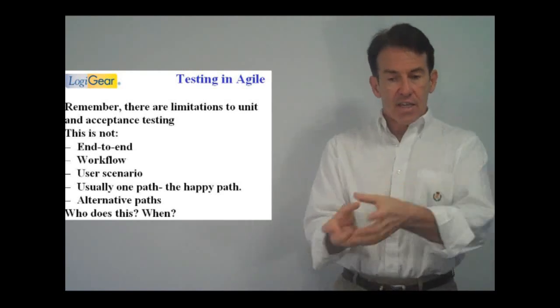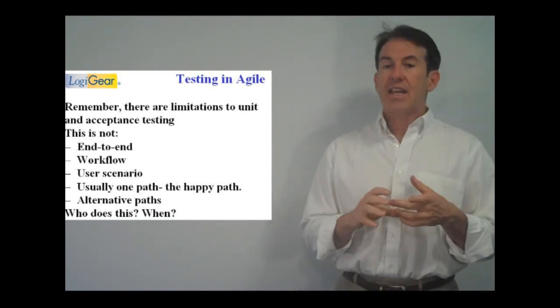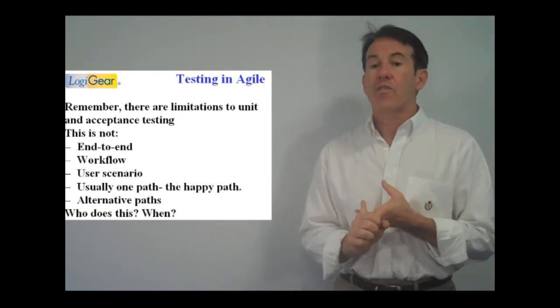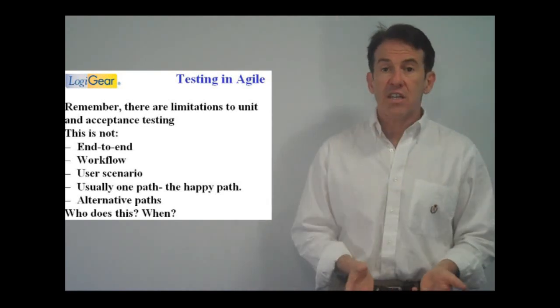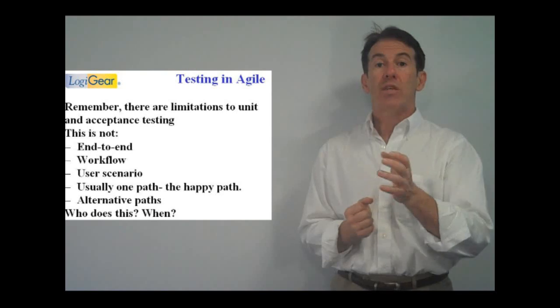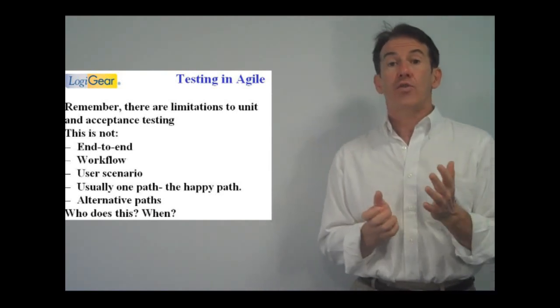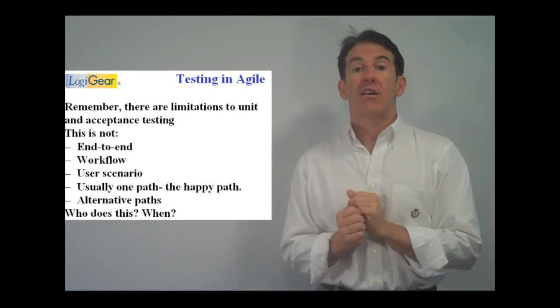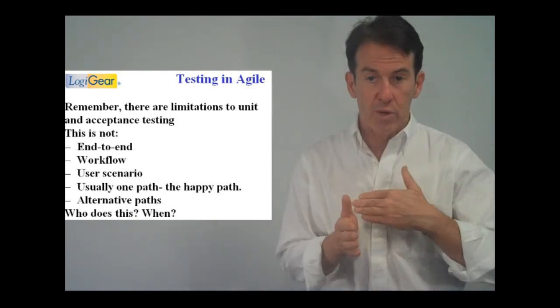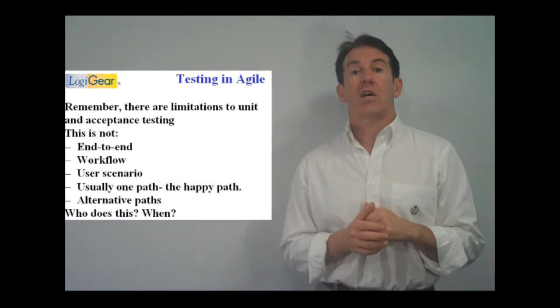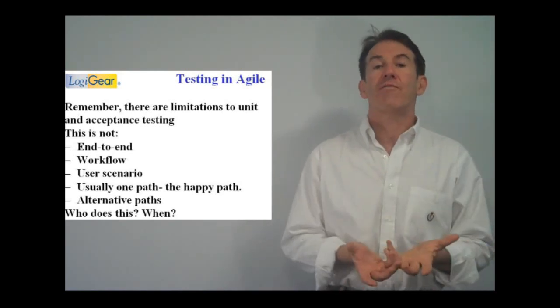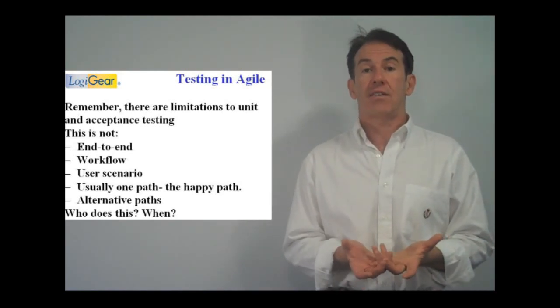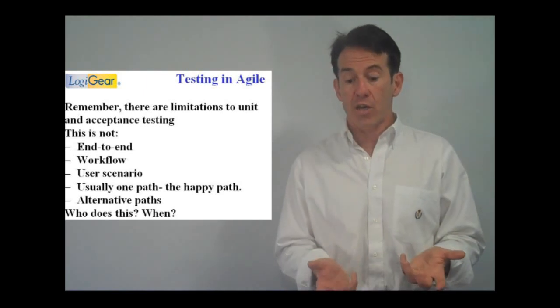So, even that unit testing and the user story validation, that is not end-to-end testing, workflow testing, user scenario testing. That kind of testing is usually one path. When you do it in Agile, even if you do it in Agile, it may just be the happy path. It may just be validating, well, this is the path that we want users to go on. That all of those alternative paths and the types of testing that we spend so much of our time on, who does that stuff?